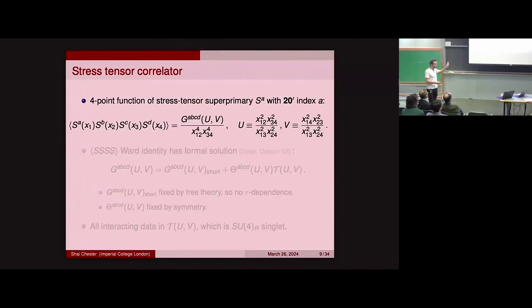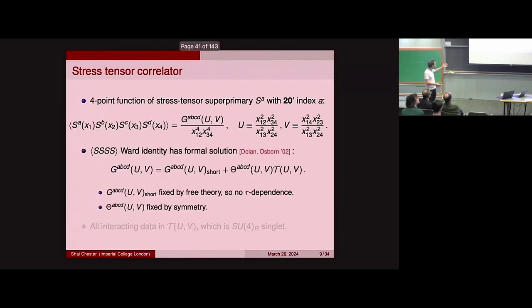The specific observable we're computing is perhaps the simplest non-trivial observable in N=4: the stress tensor four-point function. Instead of considering literally the stress tensor, we consider the super primary — the scalar S in the 20-prime of the R-symmetry. Using supersymmetry and conformal symmetry, the four-point function boils down to a function T of U and V, where U and V are conformal cross-ratios. This T is an R-symmetry singlet, and the goal of this talk is to study T(U,V) to give us the full four-point function.